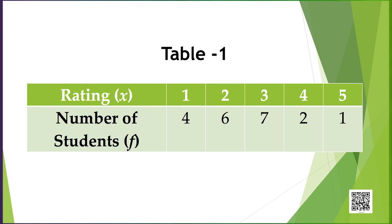In this case, the variable x is rating. It is a discrete variable which takes values 1, 2, 3, 4, and 5. The number of students represents the frequencies. There are 4 students who gave the rating 1 to the teacher. There are 6 who gave the rating 2, and so on. The total frequency is 20.